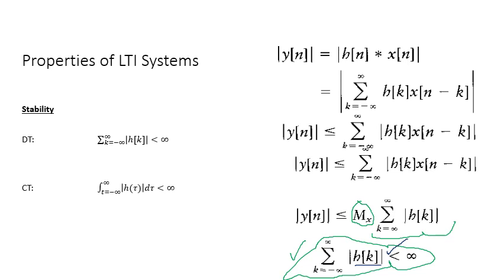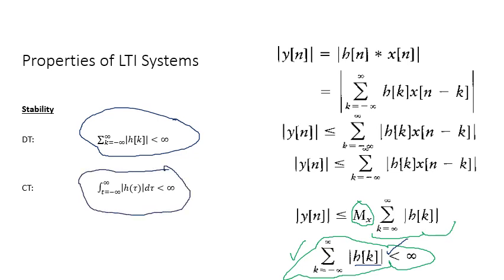Similar arguments apply to the continuous time case. For continuous time, we take the integration instead of summation. If the integral of |h(τ)| from −∞ to ∞ results in some finite value, we call such a system a stable LTI system. If it results in an infinite value, the system is unstable.